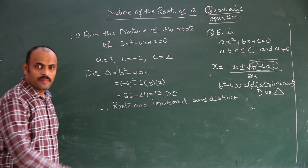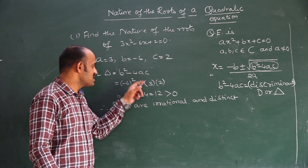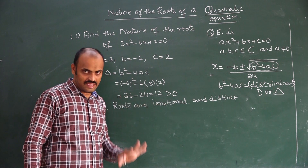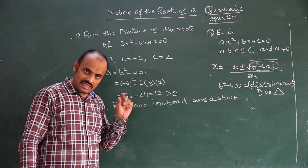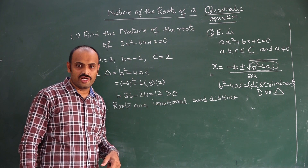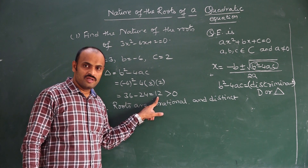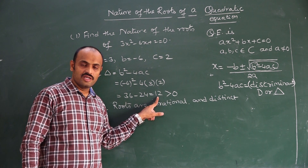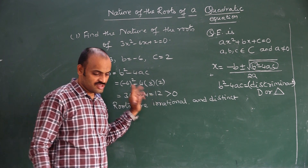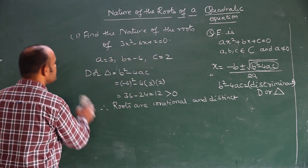So as we got B²−4AC greater than 0, roots are real. Within real, whether rational or irrational — if it is a perfect square, rational; if it is not a perfect square, they are irrational. Let's see one more question.